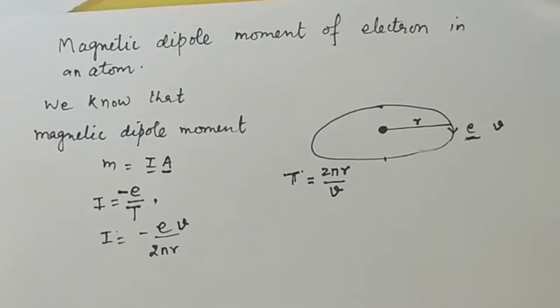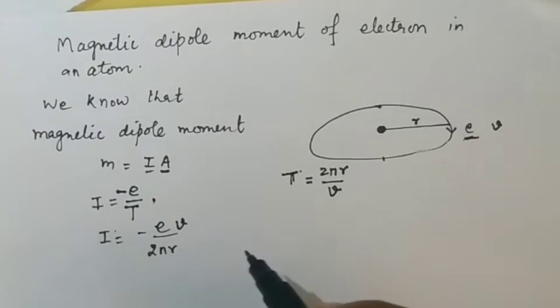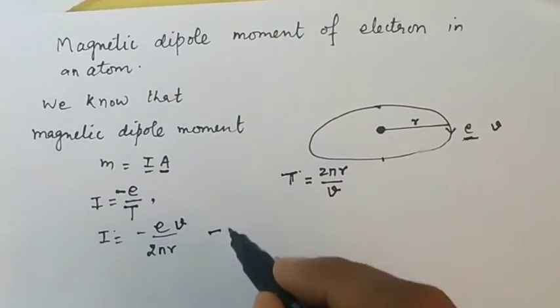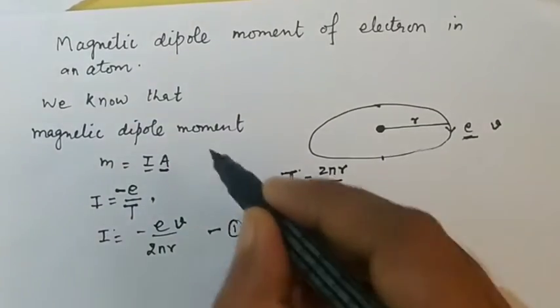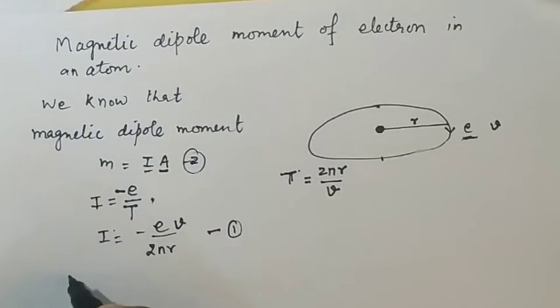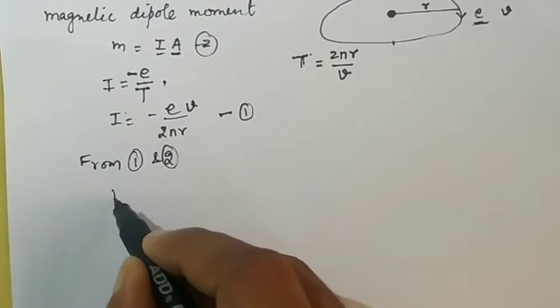This is your current contributed by an electron in an orbit. Now put this value in the above equation. This is equation 1, I take this as equation 2.